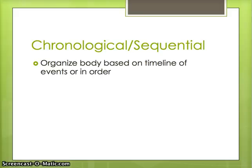The first type is chronological or sequential, and this makes a lot of sense if you start to think about what those words mean. Basically, what you do is organize the body of your speech based on the timeline of events, or in the order that the events happen. For instance, if you're giving a speech about a person, it would make a lot of sense to give a chronological or sequential speech because you could talk about the beginning, middle, and end of their life.